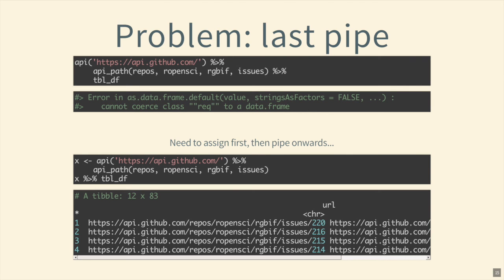One known problem is the last-pipe detection feature. dplyr does something similar but at the C++ level, which I don't want to deal with. Currently, if you pipe api() to api_path() and then to something outside this package, you get an error. You can work around it by assigning to an object and then proceeding with your pipe workflow, but that's not ideal.